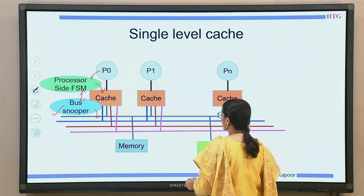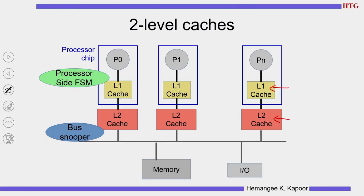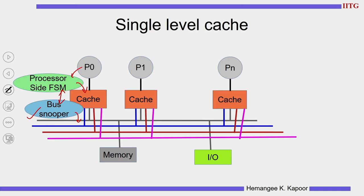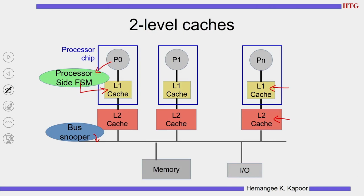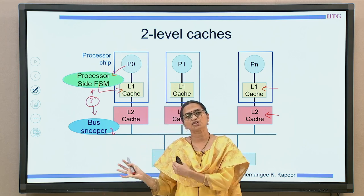From the previous slide where I had P0 followed by a single cache, now I have that cache replaced by two caches: L1 and L2. Mostly the L1 cache is on the processor chip; the L2 cache may or may not be on the processor chip. The bus snooper is still closer to the bus, and the processor FSM is closer to the processor but now only speaks with L1. So how do these two communicate information, since the processor side FSM contacts only L1 and not L2? That is the problem we are trying to handle.